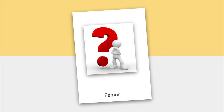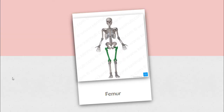So right now I want you to think about where the femur is located. The femur is actually your thigh bone, which extends from your hip all the way down to your knees. You have two femur bones, and these are where your femurs are located.